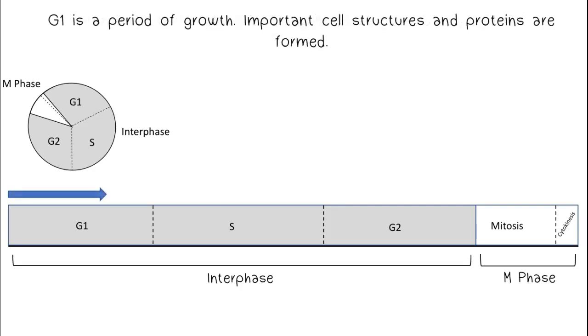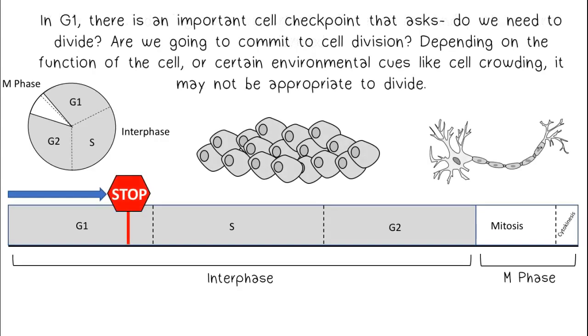G1 is a period of growth. Important cell structures and proteins are formed. In G1, there is an important cell checkpoint that asks: do we need to divide? Are we going to commit to cell division? Depending on the function of the cell, or certain environmental cues like cell crowding, it may not be appropriate to divide.